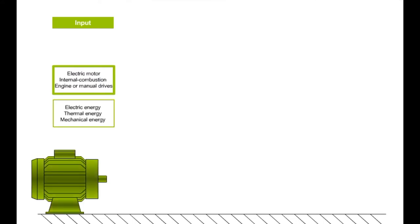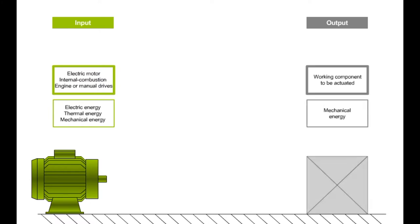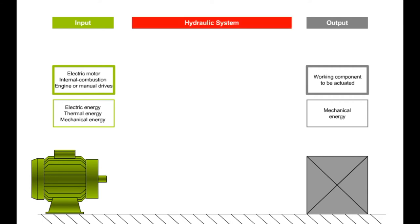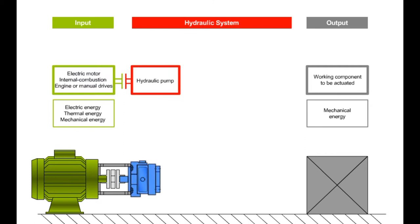On the input side, energy is provided by a motor — generally an electric motor or internal combustion engine, though a manual drive with a crank is also possible. The input side is supplied with electrical or thermal energy and provides mechanical energy. The working element, such as the enormous drill bit of the tunnel boring machine, is found on the output side and requires mechanical energy.